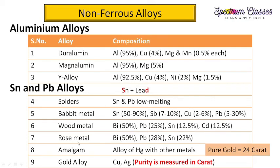Amalgams are alloys that have mercury as an ingredient. For gold alloys, the purity of gold is measured in carats. Pure gold is 24 carats, which is very soft, so to make it harder it is alloyed with either copper or silver. In India, gold jewelry is typically 22 carat, meaning 2 parts copper or silver and 22 parts gold.